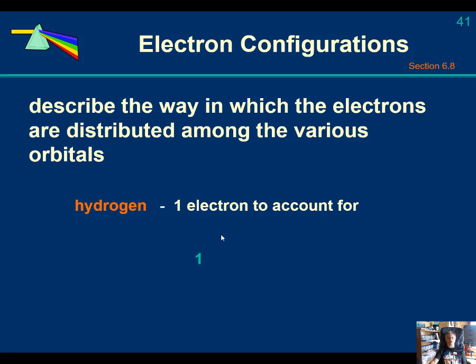So it's at n equals one, that first n-principle quantum value period. That gives us an L value of zero, so that's going to be an S orbital or an S subshell.